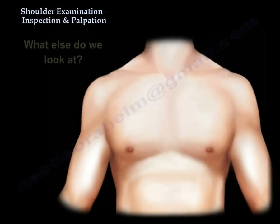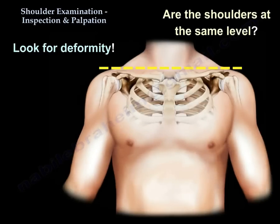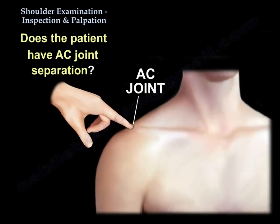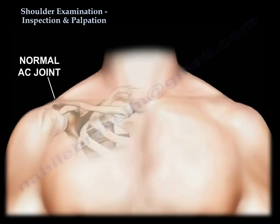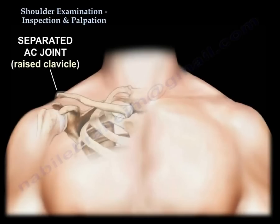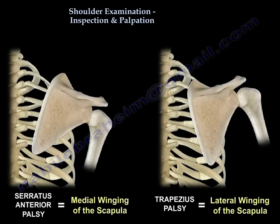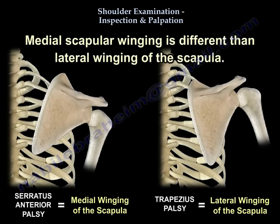So we looked at the muscles. What else do we look at? We look at deformity. Are the shoulders at the same level? Does the patient have AC separation and are the clavicles sticking up? Does the patient have winging of the scapula — and what type? Is it medial winging or lateral winging?